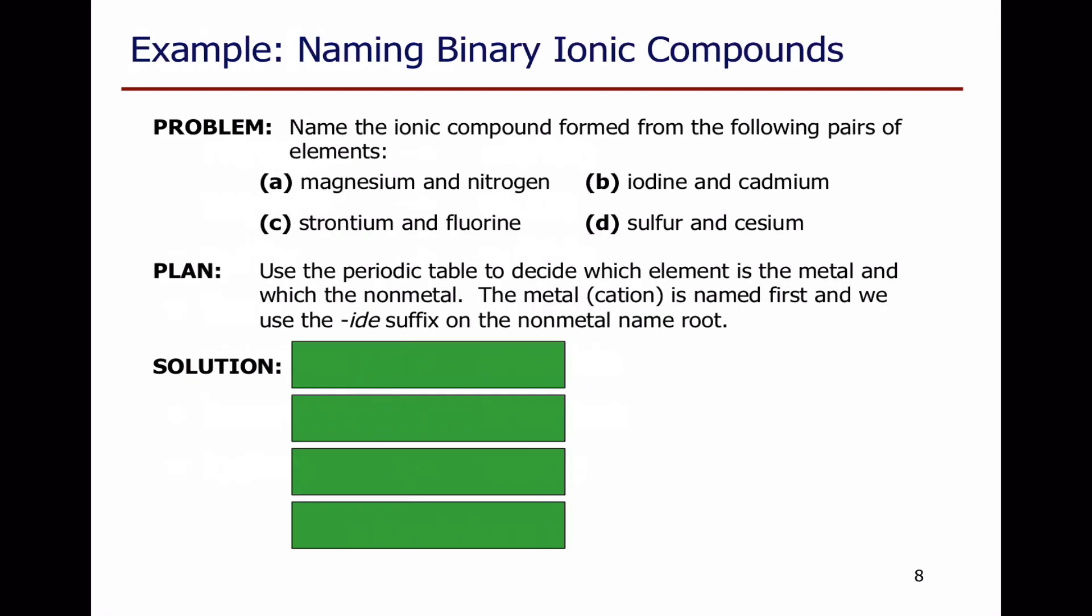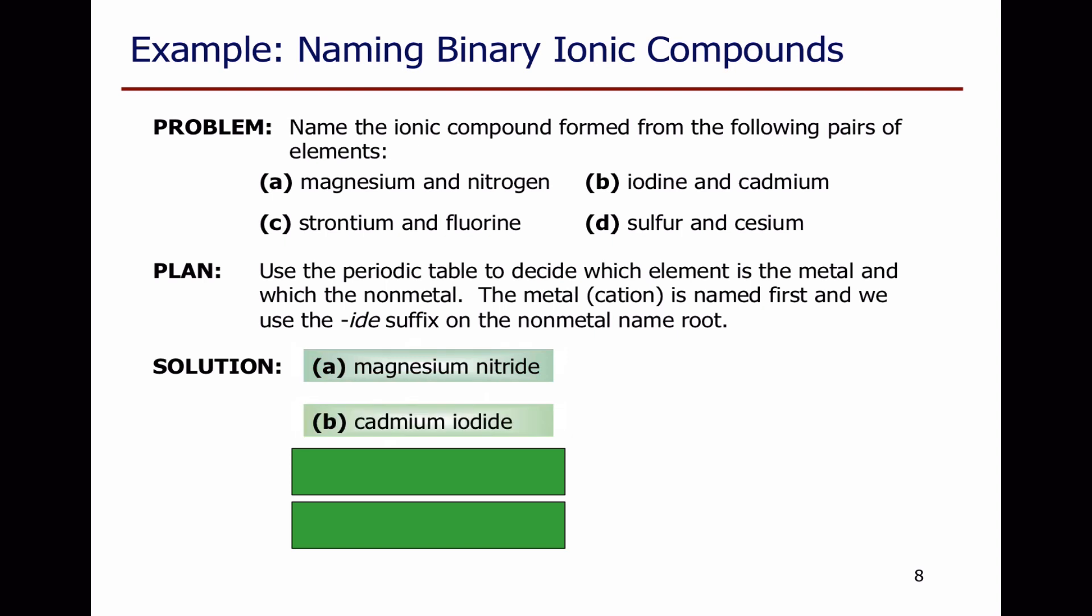Here's a test. Name the ionic compounds formed from the following pairs of elements: magnesium and nitrogen, iodine and cadmium, strontium and fluorine, sulfur and cesium. Pause the video and see if you can do it. How did you do? Rewind the video if you found this a struggle.